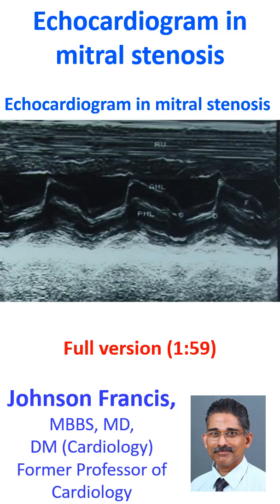M-mode echocardiogram showing the paradoxical anterior motion of the posterior mitral leaflet in diastole, with reduced separation of the two leaflets. The anterior mitral leaflet has certain points marked on its movement: C, D, E, and F.